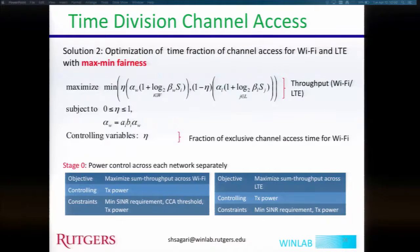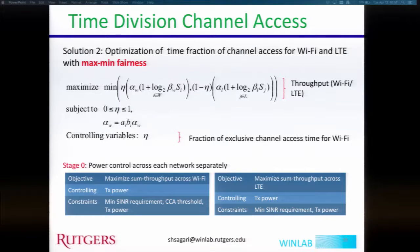The second optimization approach is time division channel access, where we optimized the fraction of time to allocate to each Wi-Fi and LTE link so they don't operate simultaneously. We maximized fairness by maximizing the minimum throughput at both Wi-Fi and LTE, controlling the fraction of time each network should have. A stage-zero step first optimizes power at each network individually.